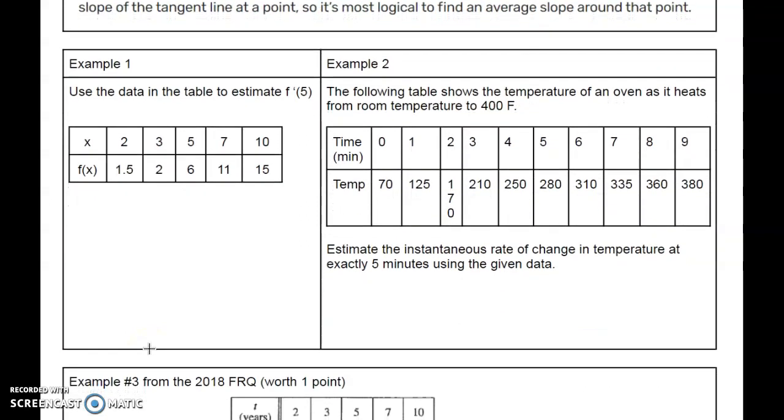On example one, it says use the data in the table to estimate f'(5). There are two different strategies. If the x value that they want is in the table, you're going to do one way. If I asked for f'(6), that would be a different way, and that'll be my third example.